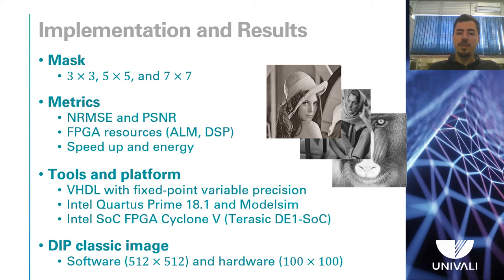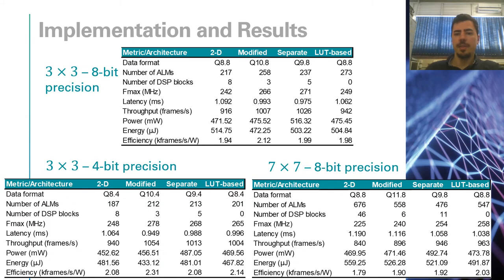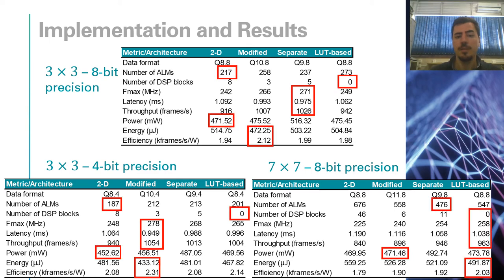The images show results using the project level for testing the accelerator on the different architectures. The analysis with the 3x3 mask at 8 bits is done because it has the best quality result, and with 4 bits because it is the minimal acceptable precision with the smallest mask. The analysis with the 7x7 mask at 8 bits is done because it is the largest configuration of the filter covered. In the different metrics, the different filters get good results. For the 3x3 4-bit precision approach, the MultiFilter architecture is the best. For the 7x7 with 8-bit precision, the LUT-based one stands out as the best architecture.